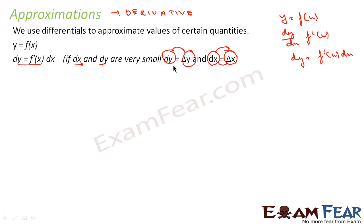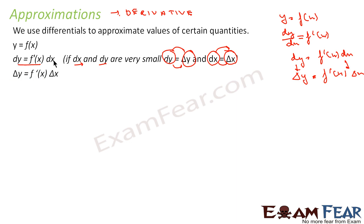So what have I done? I wrote y = f(x), differentiated it, got dy/dx = f'(x), then dy = f'(x)·dx. Since dy and dx are very small, I can write dy as Δy and dx as Δx. This gives the equation: Δy = f'(x)·Δx. This is the key formula to find approximate values.